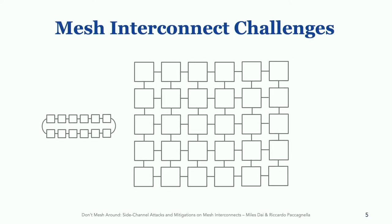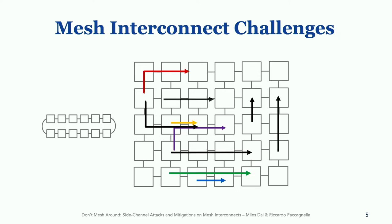Intel's mesh is composed of a two-dimensional array of tiles, where each tile can contain up to one core. These cores can send messages to one another by injecting packets onto the interconnect. The two-dimensional nature of this interconnect adds a variety of different challenges when compared to the ring architecture. For instance, there are simply many more ways for traffic flows to interfere with one another, not to mention many more placement options for these traffic flows.